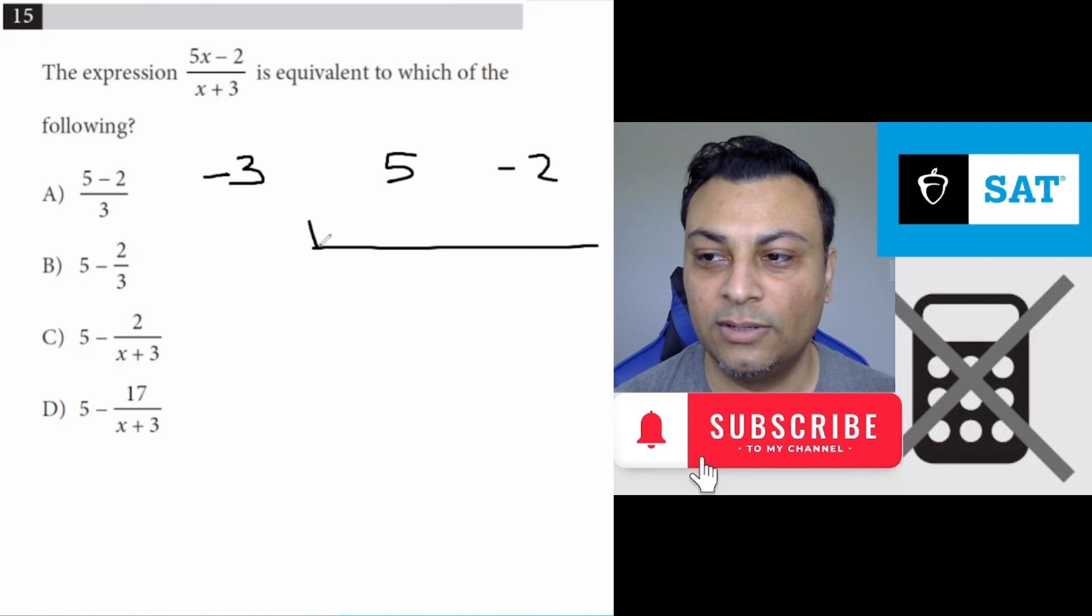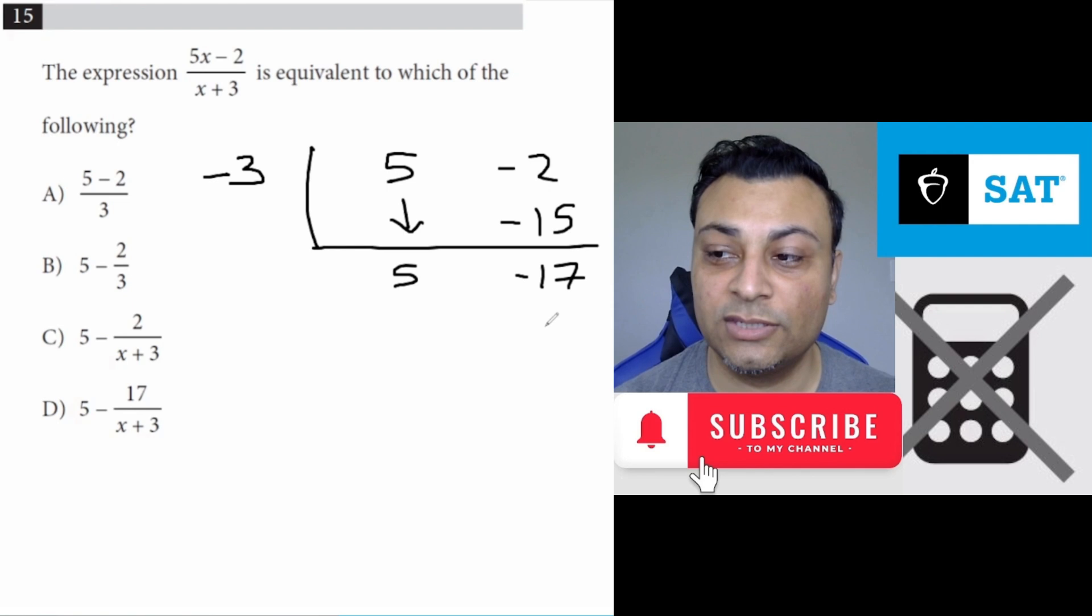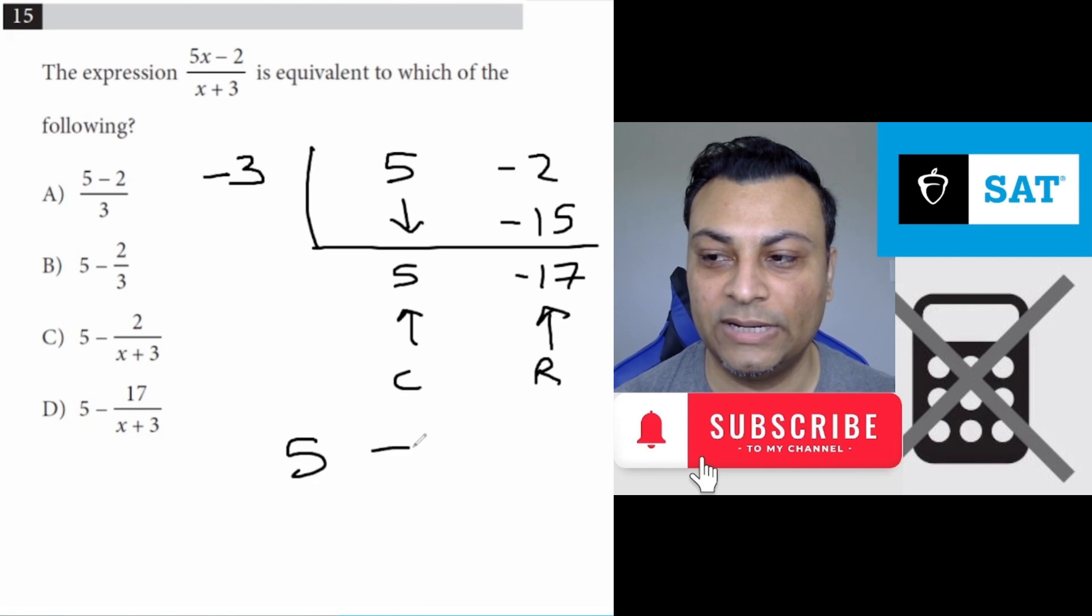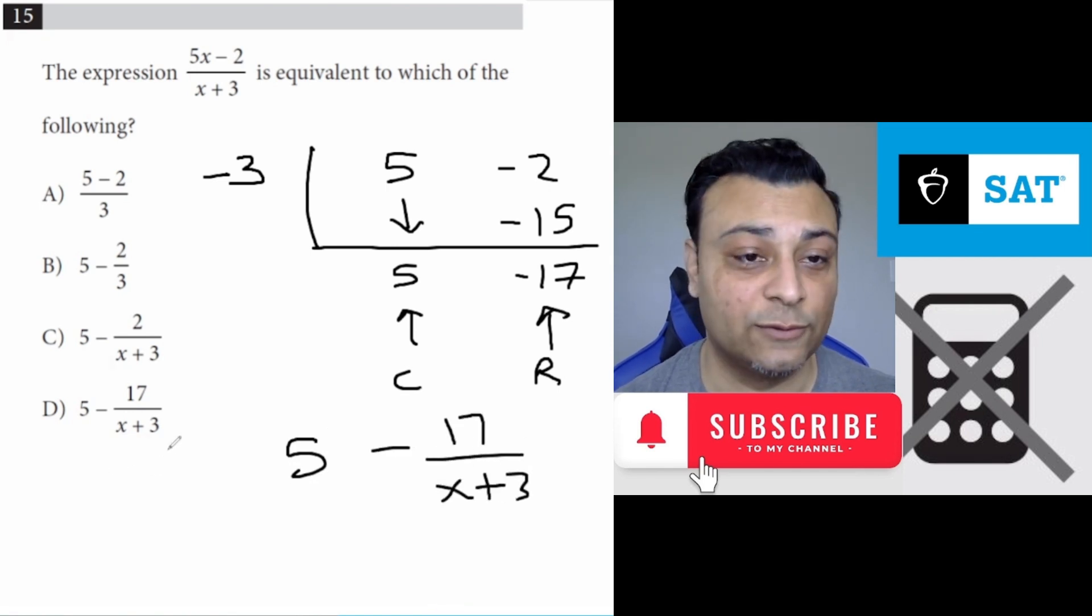And what you have here is you bring the 5 down. 5 times negative 3 is negative 15. And then you add these up, you get negative 17. Once again, this is the remainder. This is a constant. So the final answer is 5 minus 17 over x plus 3, which is what they have for choice D.